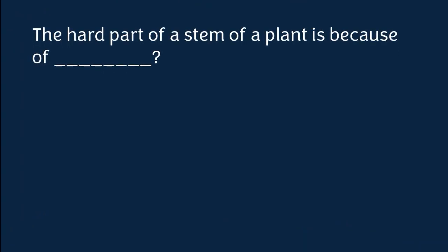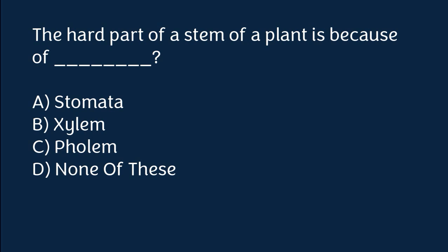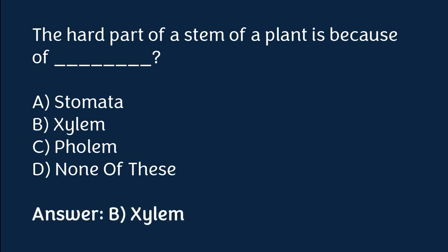The hard part of a stem of a plant is because of: stomata, xylem, phylum, or none of these. The correct answer is option B. The hard part of a stem of a plant is because of xylem.